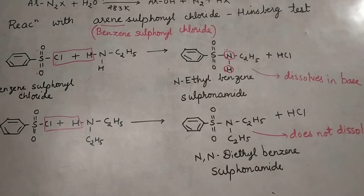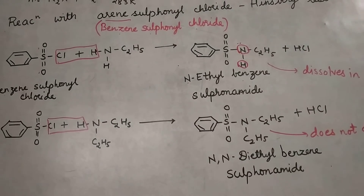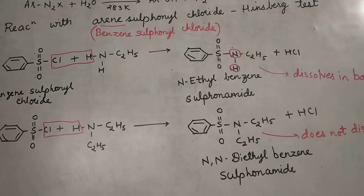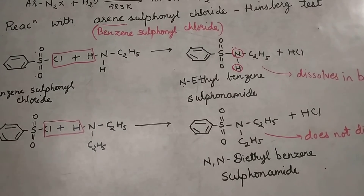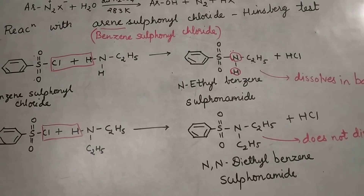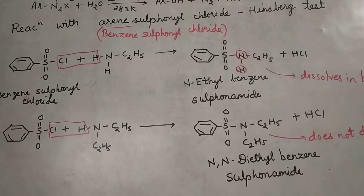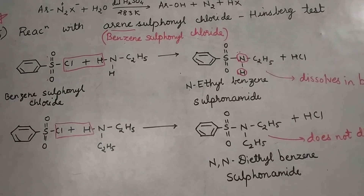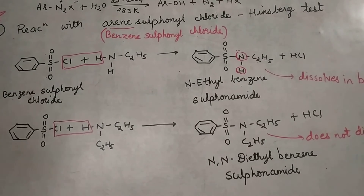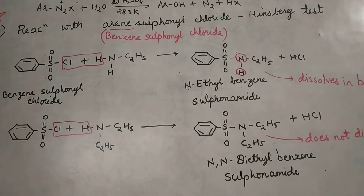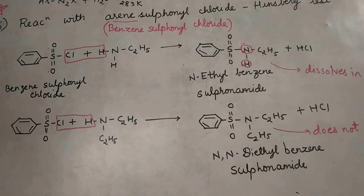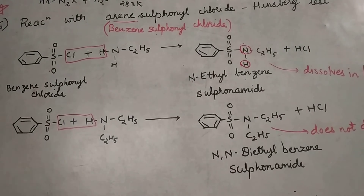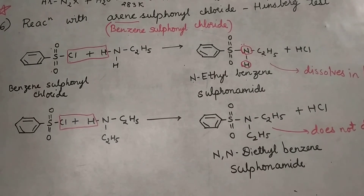This can be asked in MCQ — which reagent distinguishes the three amines — or the full reaction can be asked directly. You have to suggest that benzene sulfonyl chloride is used, and show what happens: the primary amine product dissolves in base, the secondary amine product does not dissolve, and the tertiary amine does not form a product at all because it does not carry any H on nitrogen. Go through these reactions properly.